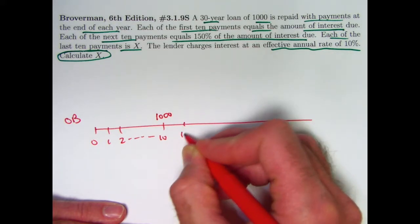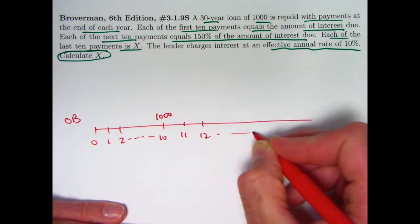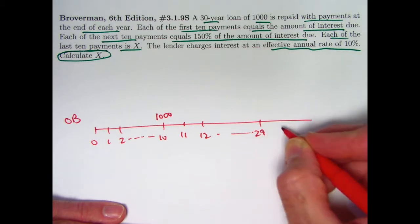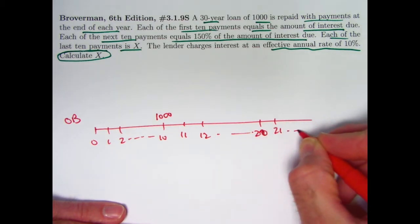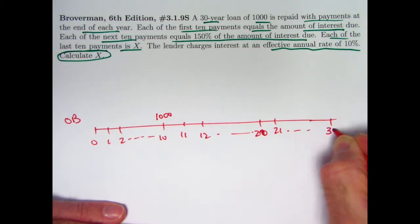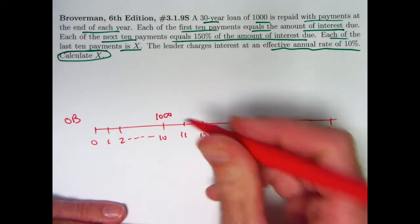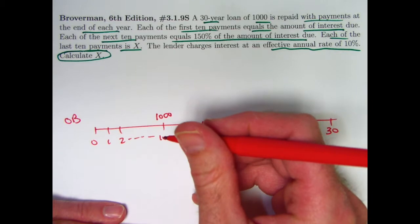It's only after that point that things get more interesting. Got something happening for the next group of 10 payments from time 11 to time 20, and then something else happened for the last group of payments from time 21 to time 30. All right, so let's break this down.